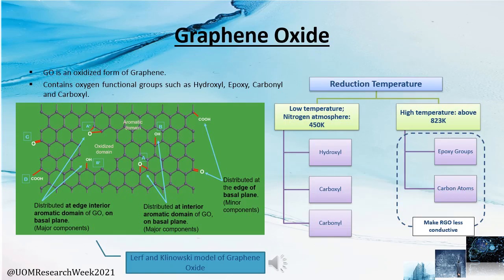Graphene oxide is an oxidized form of graphene. It contains oxygen functional groups such as hydroxyls, epoxyls, carbonyls, and carboxyls. For our project we used the Lerf-Klinowski model of graphene oxide. According to this model, oxygen groups can be categorized into two components: major components and minor components. Major components — commonly hydroxyls and epoxyls — are distributed on the basal plane of graphene oxide. Minor components — commonly carbonyls and carboxyls — are distributed at the edge of the basal plane.